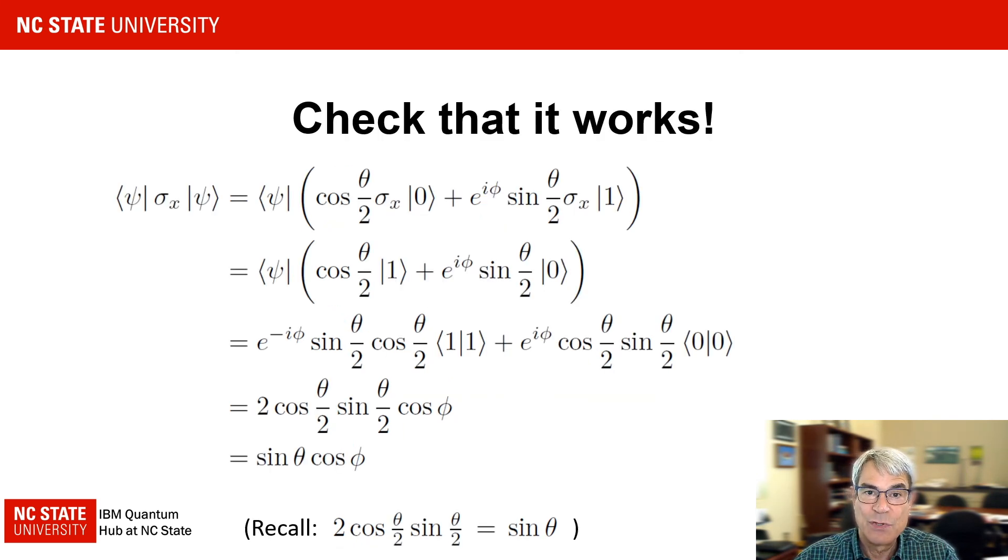To confirm that this works the way we think it should, let's calculate the expected value of the x component of the spin vector operator. First, let's expand the state psi on the right. Then the operator sigma x can be cleared by recognizing that an x-gate simply flips the qubit state. Next, we expand the transposed state on the left and simplify using the orthogonality of the state 0 and 1. Factoring out the product of sine theta by 2 cosine theta by 2 allows us to group the exponential terms into the cosine of phi. Finally, simplifying with the trig identity shown at the bottom gives us the expected expression for the projection of the unit vector with direction theta phi onto the x-axis.